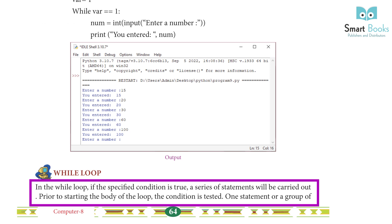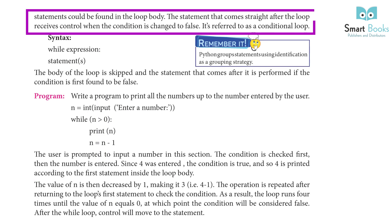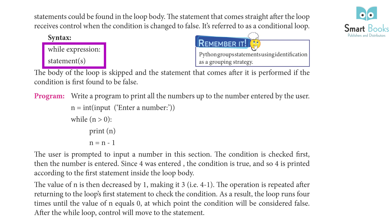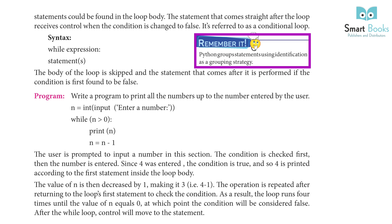While loop: in the while loop, if the specified condition is true, a series of statements will be carried out. Prior to starting the body of the loop, the condition is tested. One statement or a group of statements could be found in the loop body. When the condition changes to false, control passes to the statement after the loop — it is referred to as a conditional loop. Syntax: while expression: statements. If the condition is first found to be false, the body of the loop is skipped.